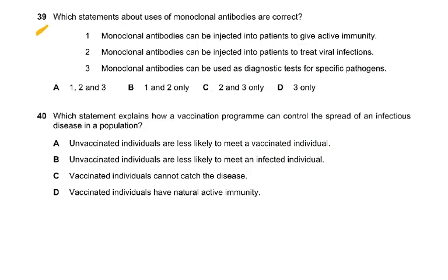Question number 39. Which statements about the use of monoclonal antibodies are correct? Monoclonal antibodies can be injected into patients to give active immunity — no, active immunity is when your own lymphocytes work. When you're given monoclonal antibodies, it cannot result in active immunity because your own lymphocytes are not producing them. Monoclonal antibodies can be injected into patients to treat viral infections — yes, that could be correct. They can be used as diagnostics for specific pathogens — yes. So the answer is C: 2 and 3 only.